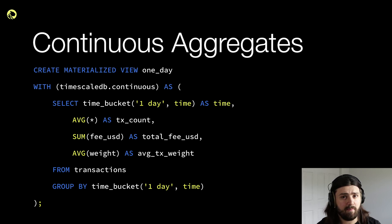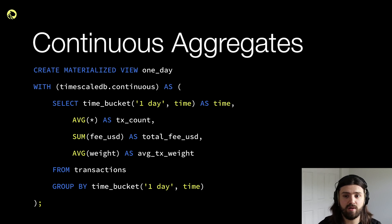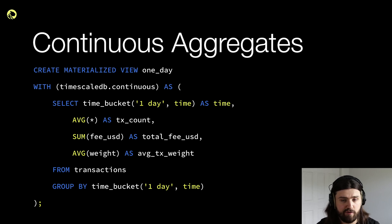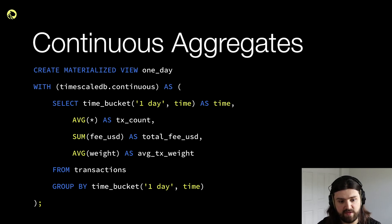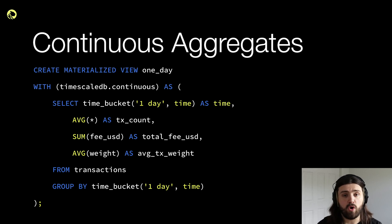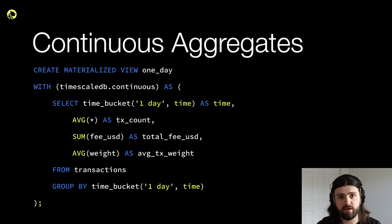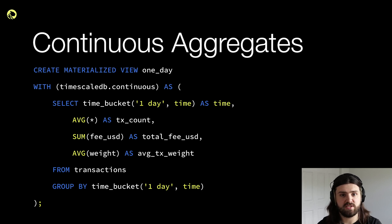Essentially, if you're using Continuous Aggregates, it will pre-aggregate all your data — pre-calculate metrics like the average or the sum of a specific field — so that you don't have to calculate that on the fly. In this case, we're calculating the daily average number of transactions per day, so that if we try to visualize that in a graph, we don't have to compute it on the fly, which would take quite a while.